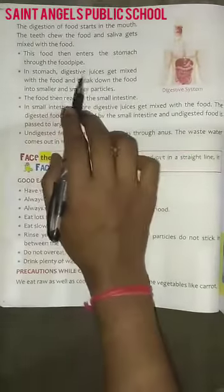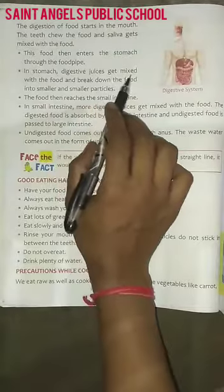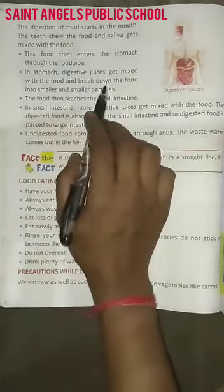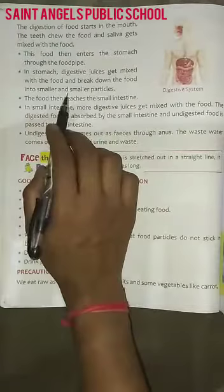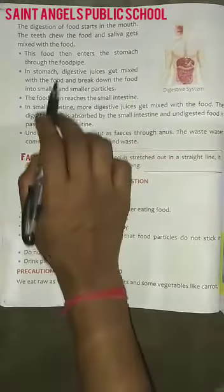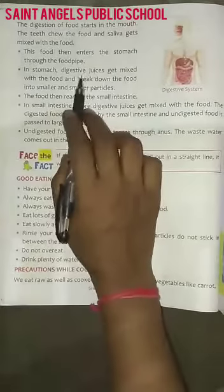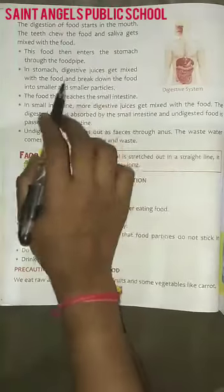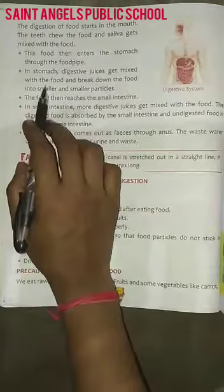In the stomach, digestive juices get mixed with the food and break down the food into smaller and smaller particles. Stomach meh pachak raks ismeh khane meh mil jaate hai.